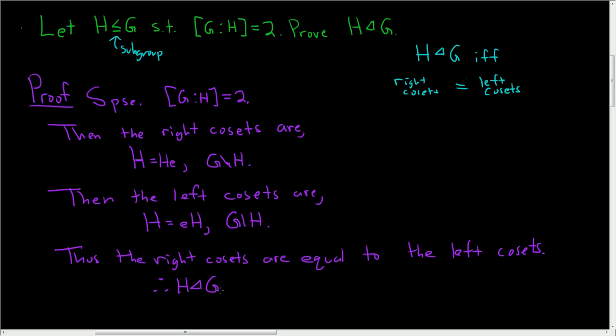And so why are normal subgroups important? Whenever you have normality, the set of cosets, which is G mod H, actually turns into a group. So its elements are actually cosets, which is kind of cool. I hope that made sense.